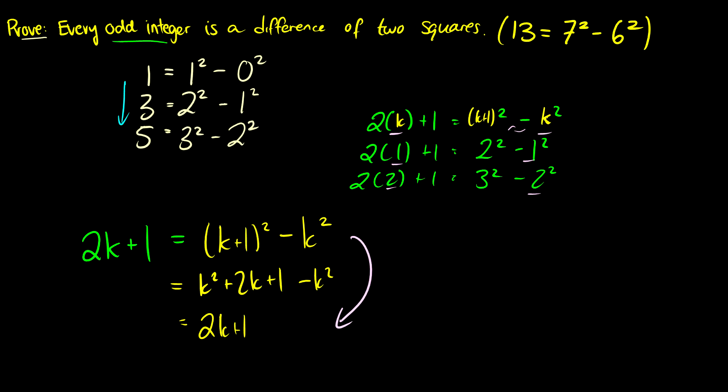So every odd integer can be written as a difference of two squares, k plus 1 squared minus k squared. So we should be able to plug this in for any value.